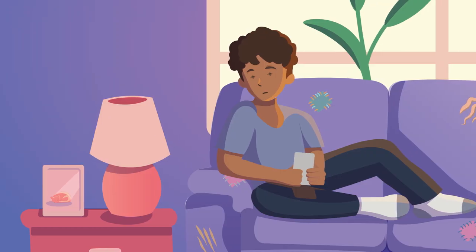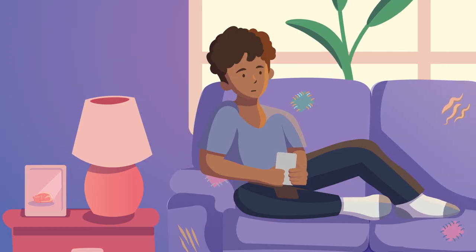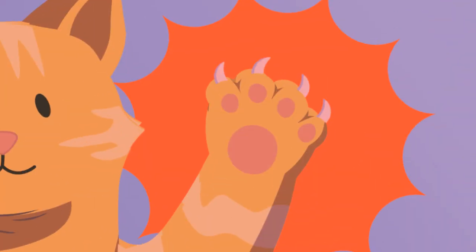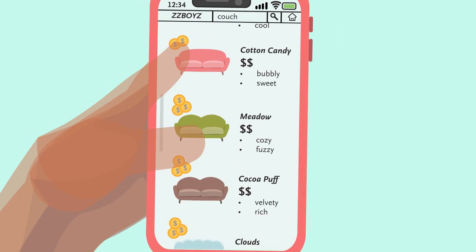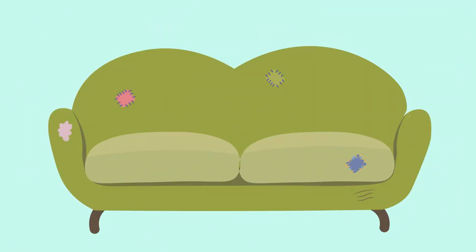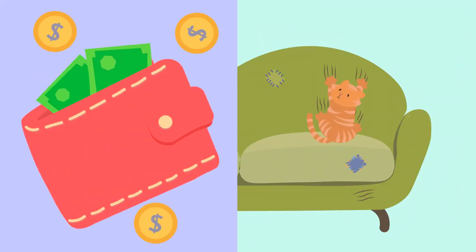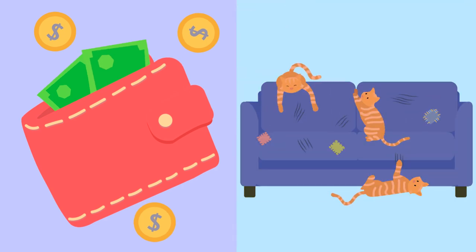It's time to get rid of that old couch you've had for years and buy something nicer. But there's a problem — you have a cat. You don't want to spend a ton of money only to have to replace the couch within five years as soon as your cat tears it apart. How much you're willing to spend really depends on how long you expect your couch to survive.